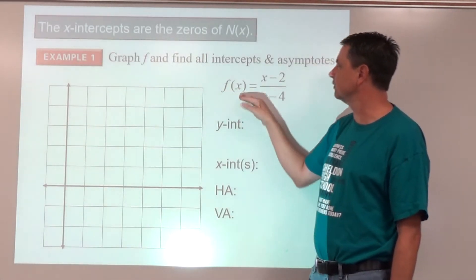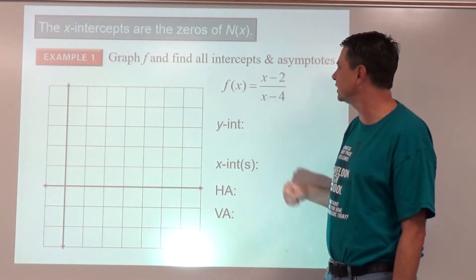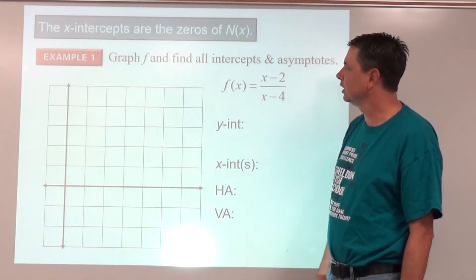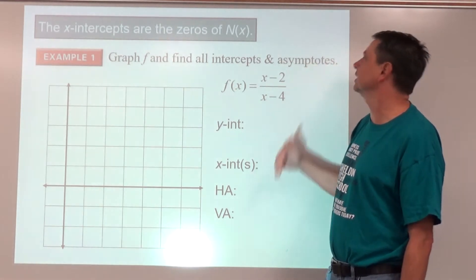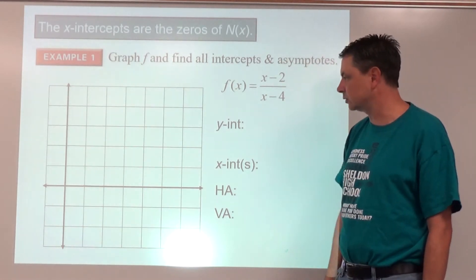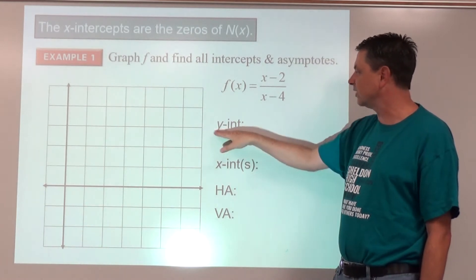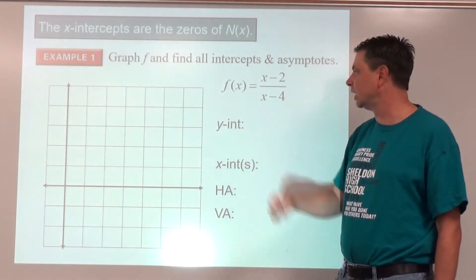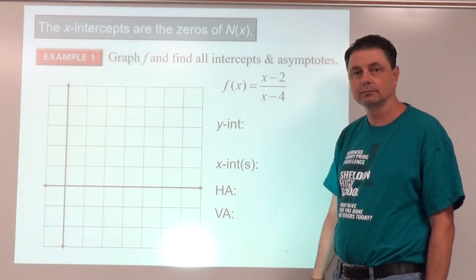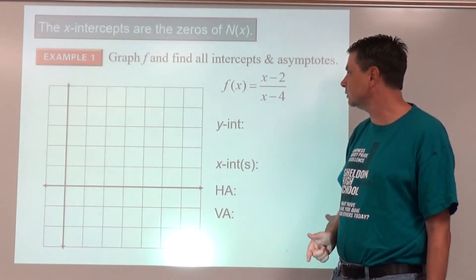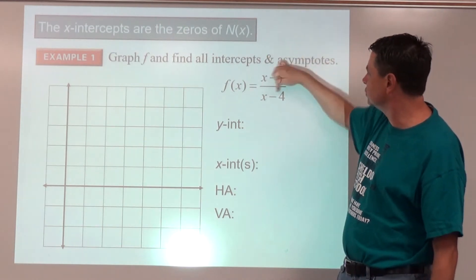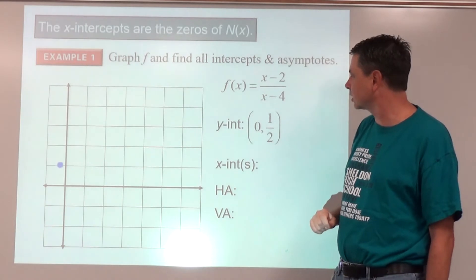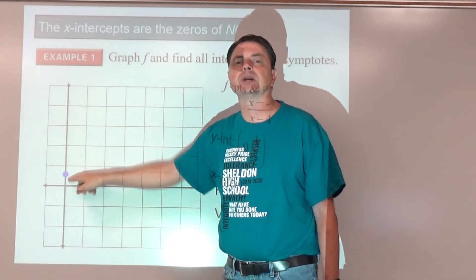Example number one: f of x equals (x minus 2) divided by (x minus 4). We're going to graph it and find all intercepts and asymptotes. Let's start by finding the y-intercept — substitute zero for x — and we get negative two divided by negative four. We have a y-intercept at (0, 1/2), so we plot that point.